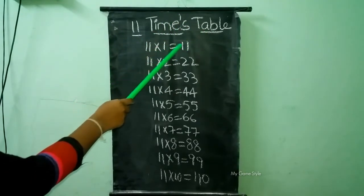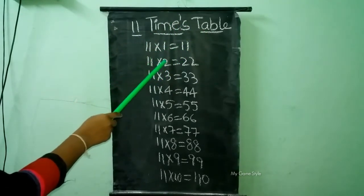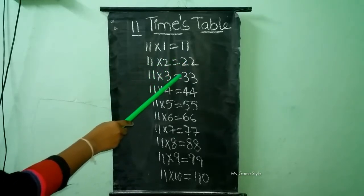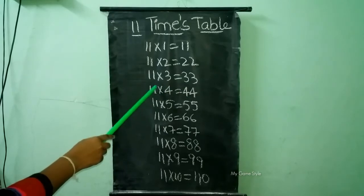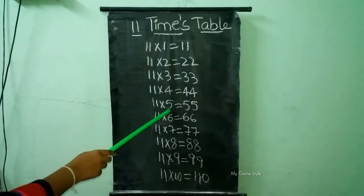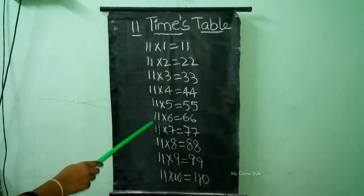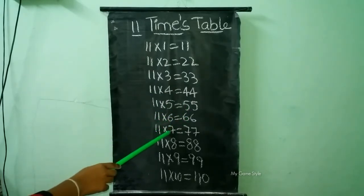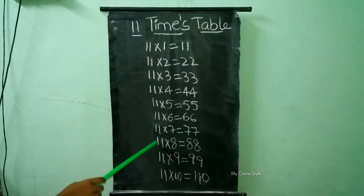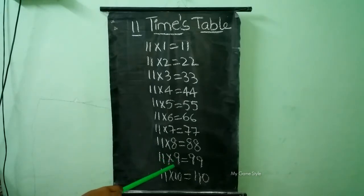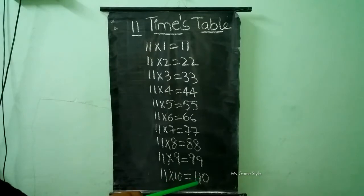11 times table. 11 times 1 is equal to 11. 11 times 2 is equal to 22. 11 times 3 is equal to 33. 11 times 4 is equal to 44. 11 times 5 is equal to 55. 11 times 6 is equal to 66. 11 times 7 is equal to 77. 11 times 8 is equal to 88. 11 times 9 is equal to 99. 11 times 10 is equal to 110.